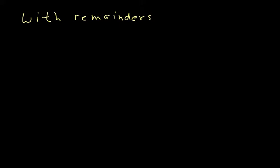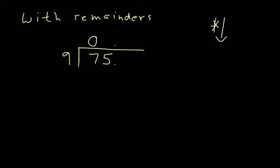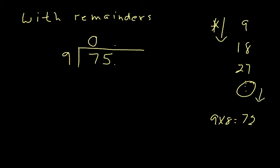Now the next one is going to be with remainders. We're going to take 75 and divide it by nine. Same thing as before — I look at my nine: does nine go into seven? No, it doesn't, so I put a zero here. Don't forget your times tables list down the side if you are not super skilled with the times tables. Nine goes into 75 — well, I know that nine times eight is 72, which I would have gotten if I continued the times tables down the side.